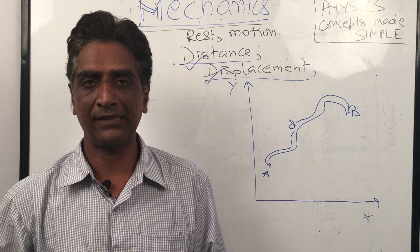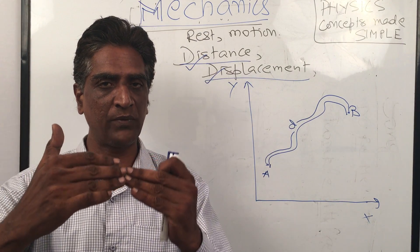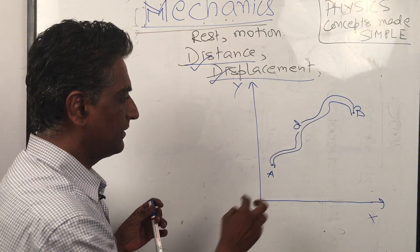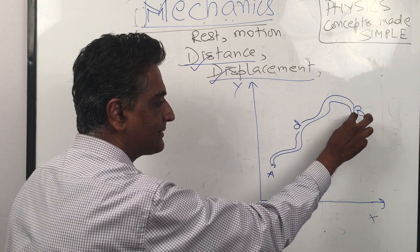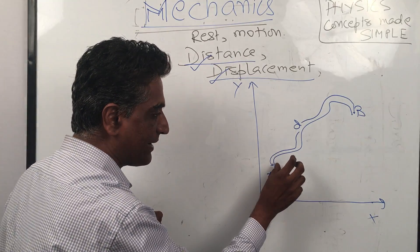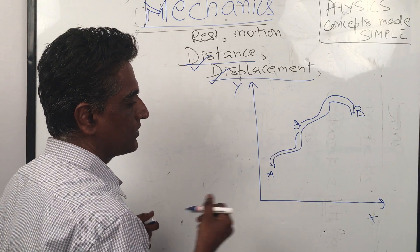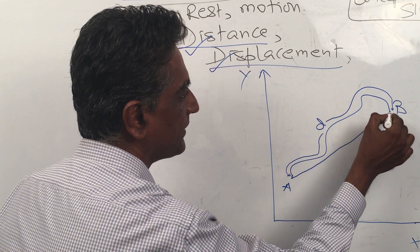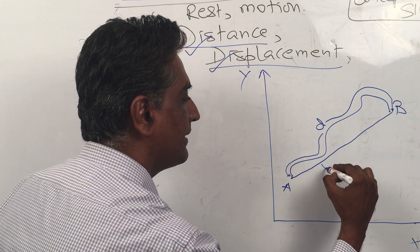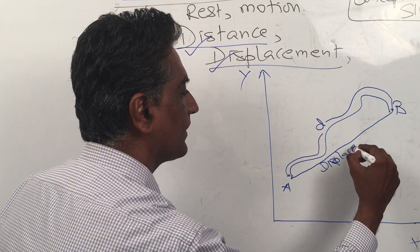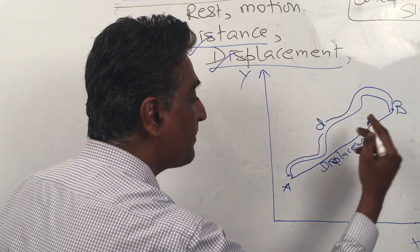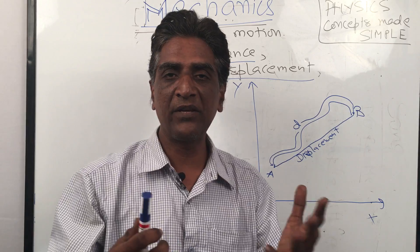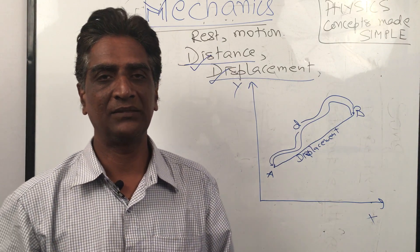Displacement — that English word is also very beautiful. Displacement is like the net result: what is the net result? The body did go along a curved path, but ultimately the net movement was from A to B. So this straight line from A to B is called displacement. It got displaced from A to B.